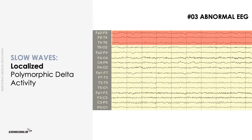While looking at EEG for localized slow waves, it is important to focus on the corresponding areas of both hemispheres. For example, in this picture, try to compare the first-second tracing of FP2F8 with FP1F7. The classic EEG sign of a focal disturbance in cerebral function is focal delta activity.